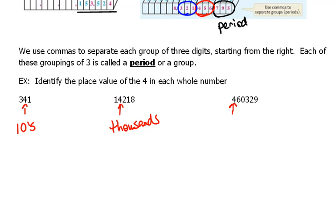Then over here, in this number, remember if you need to put a comma in there, you can. This is 460,329. So this four is in the 100,000 spot.